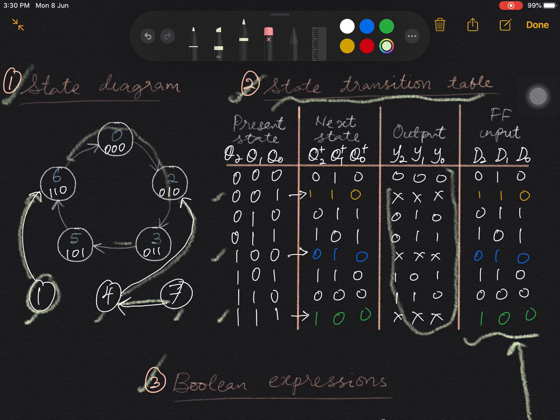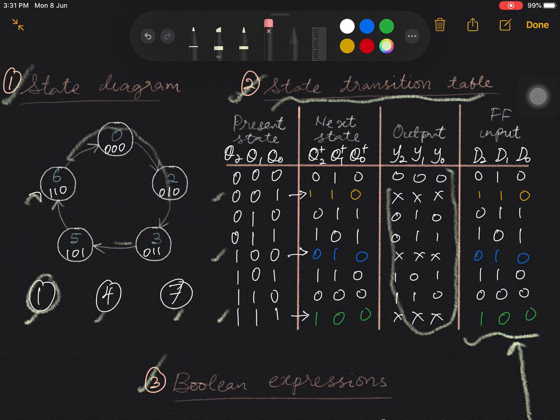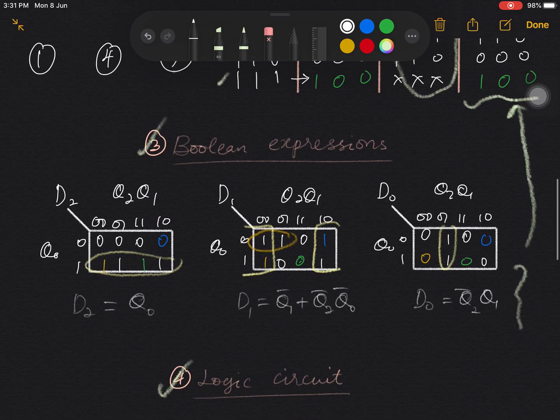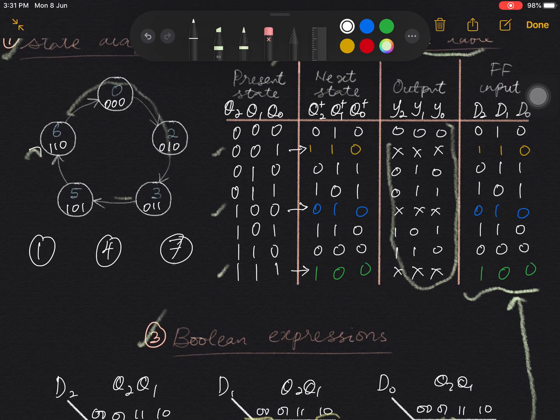And lastly, how to tell that a counter is non-self-starting. If the unused states only circulate among themselves and never go to one of the used states, then we can say the counter is non-self-starting. For example, after doing the reverse engineering procedure, if we figure out that 1 goes to 4,